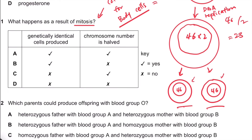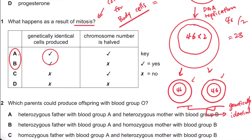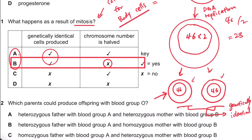So when this happens, since the daughter cells contain exactly the same chromosomes, they are genetically identical — meaning the same. Does mitosis produce genetically identical cells? Yes. Is the chromosome number halved? No, it stays exactly the same. So the answer is B.